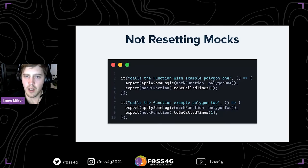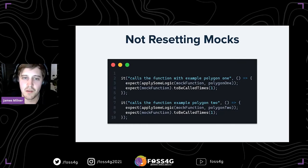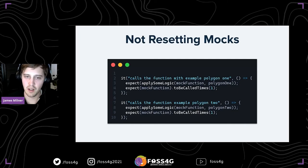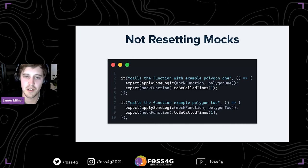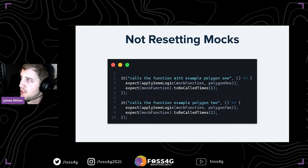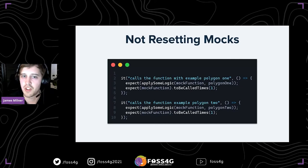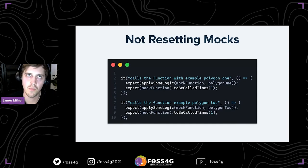Another common issue is not resetting mocks. Here's an example of a piece of code that applies some logic and passes in a mock function, but if you forget to reset the mock between tests, the second test will fail because that mock has already been called in the previous function. This isn't specific to geospatial code, but it trips me up especially with the MapboxGL side of things when mocks aren't being reset properly. Jest has a function called `resetAllMocks` — you can call that in a `beforeEach` and it will make sure the mocks are reset.